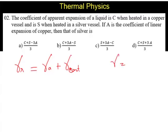But alpha, the volume expansion, is 3 times the linear expansion. So we can say here alpha R equal to alpha A plus 3 alpha of the container.